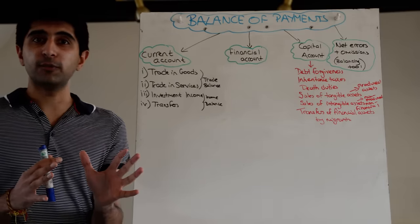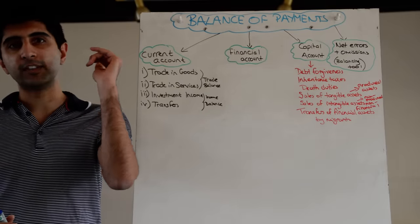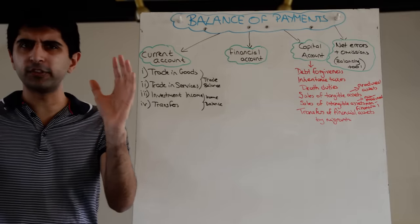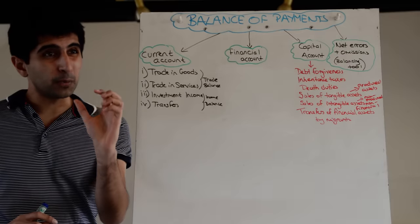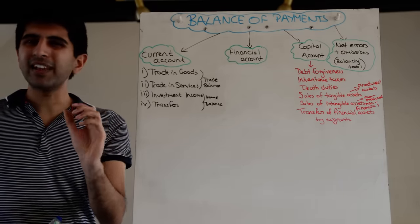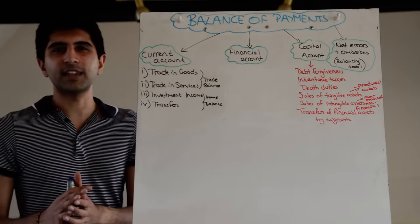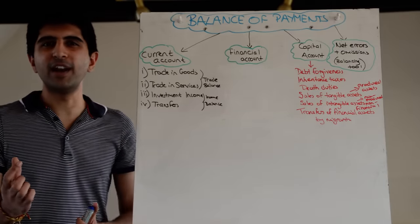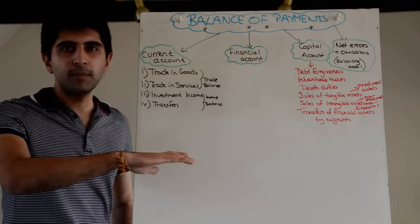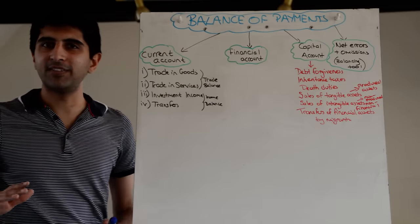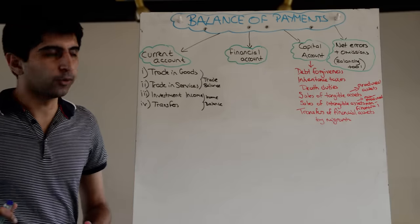If you actually look at the balance of payments records for countries, you'll see that there is the current account, which is the most substantial part. The financial account is a very big part as well, and the capital account is a much, much smaller part. It accounts for international transactions that are very minor in nature. You'll never be asked in the exam to explain the capital account and what's actually recorded in it.